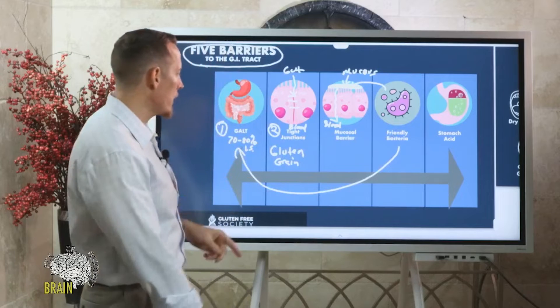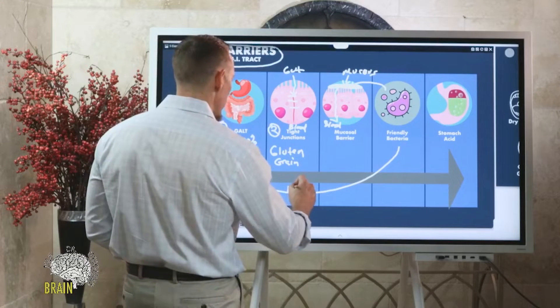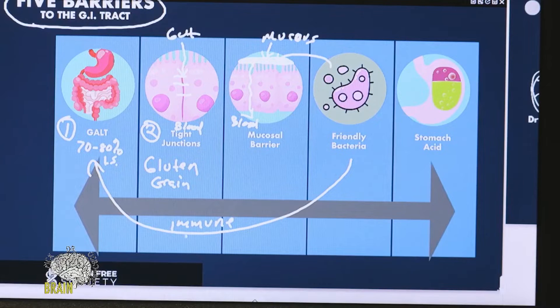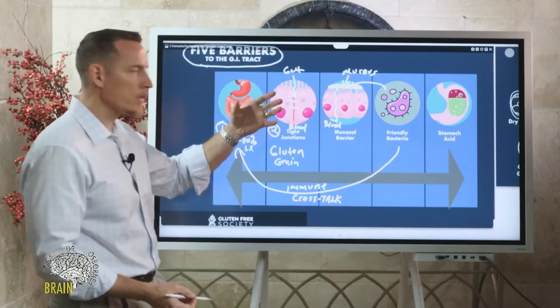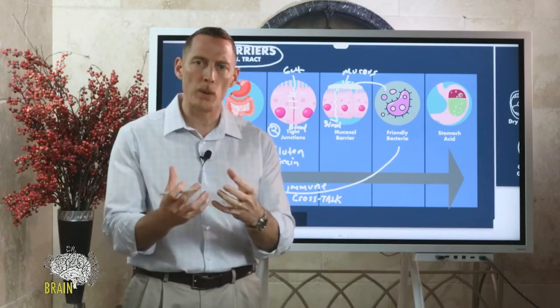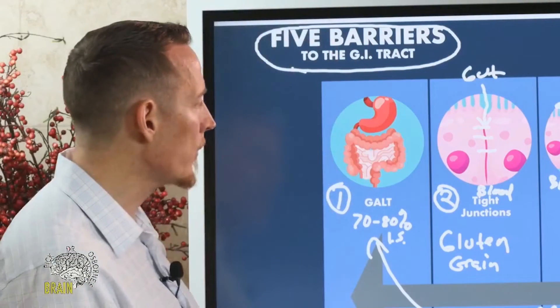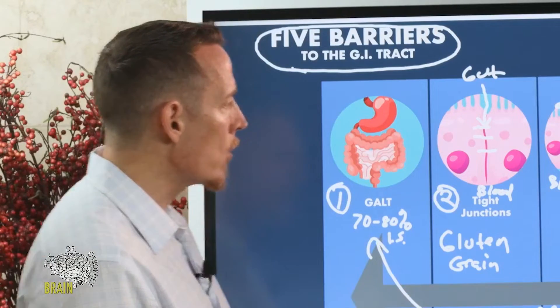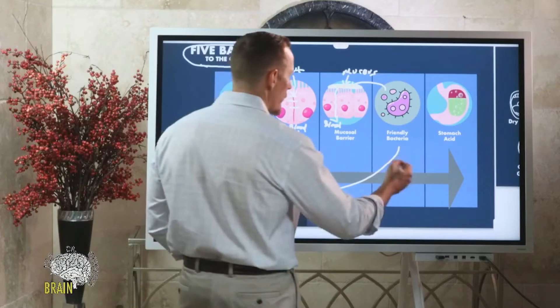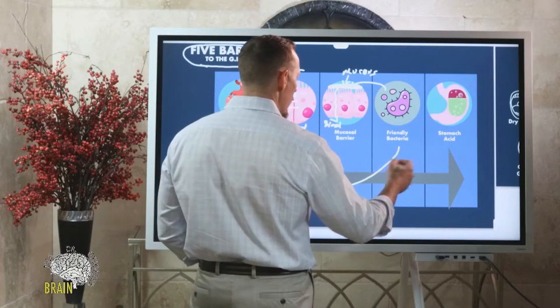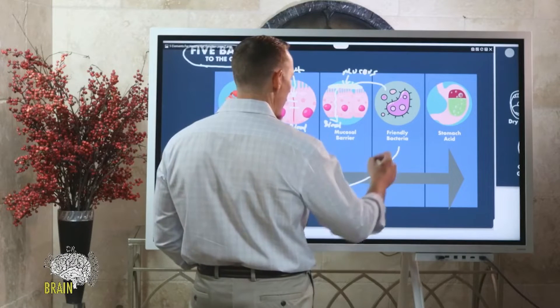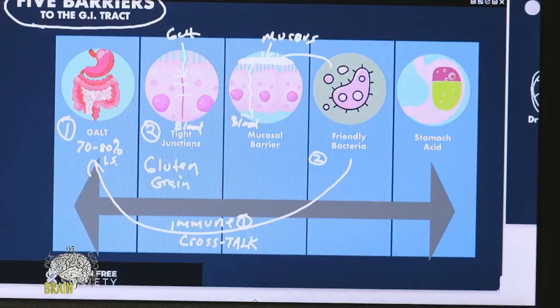The friendly bacteria do something called immune crosstalk. They talk to your immune system and your immune system talks back to them. They communicate about the contents of your GI tract so that they can prepare for things that might be dangerous or harmful for you. This immune crosstalk, very important - that's just one of the functions of the good bacteria.